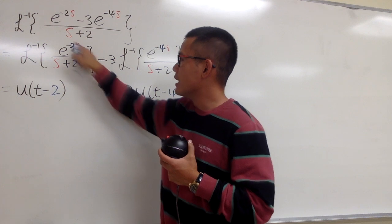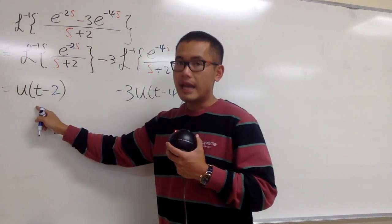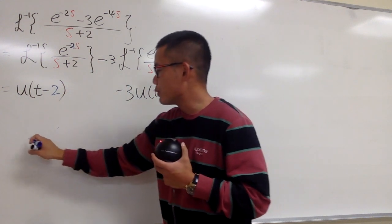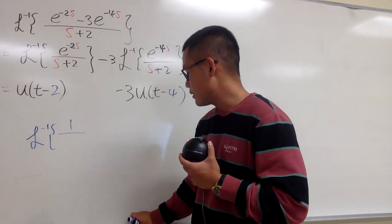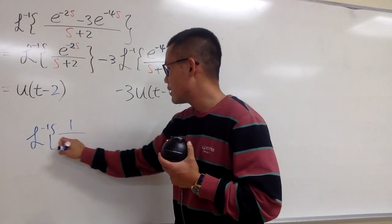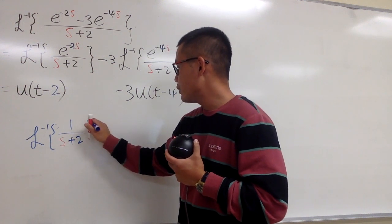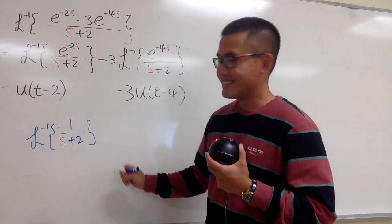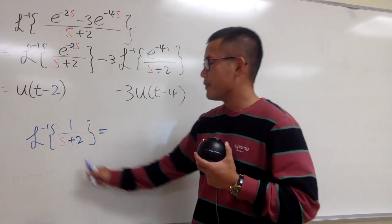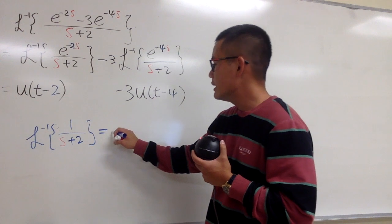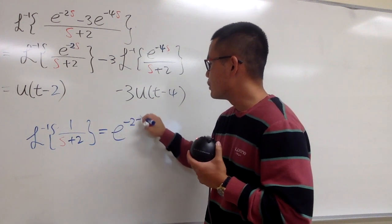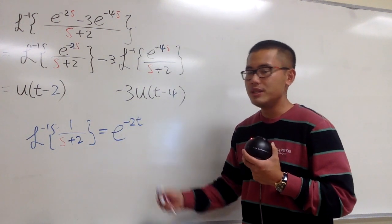You look at the leftover, the inverse Laplace of just 1 over s plus 2. You have to ask yourself, this is what? This is s minus negative 2, that's going to be e to the negative 2t.